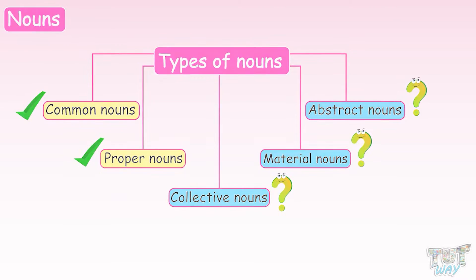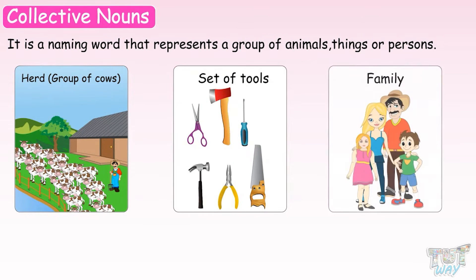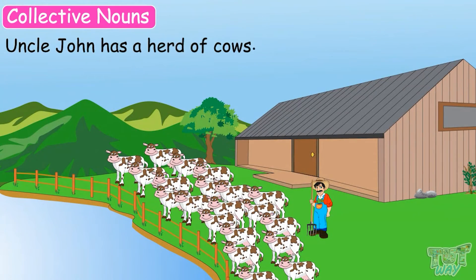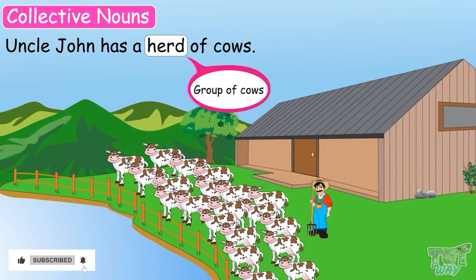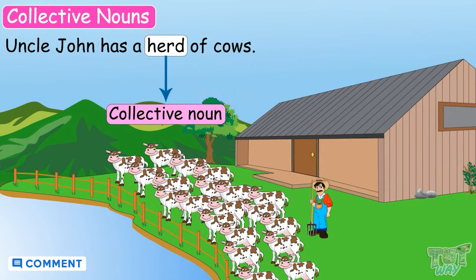Let's start with collective nouns. A collective noun is a naming word that represents a group of animals, things, or persons. Let's learn with some examples. Uncle John has a herd of cows. In this sentence, the word herd refers to a group of cows. So herd represents not a single thing, but a group of things. So it's a collective noun.